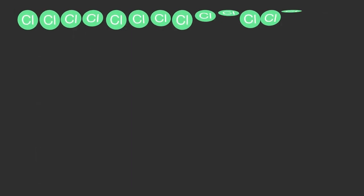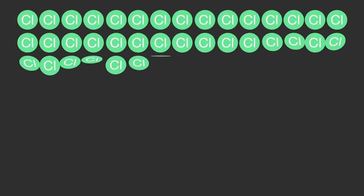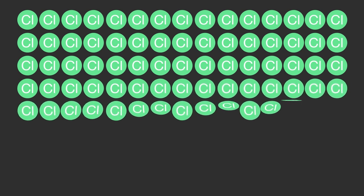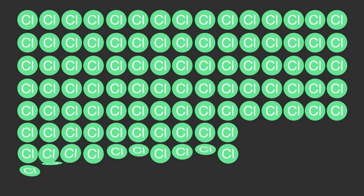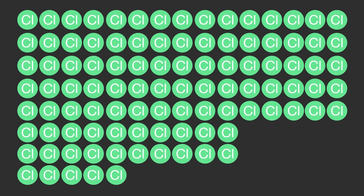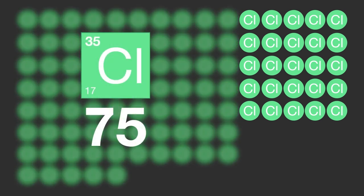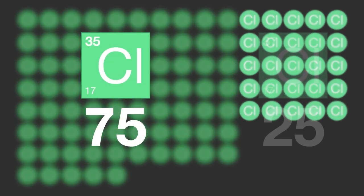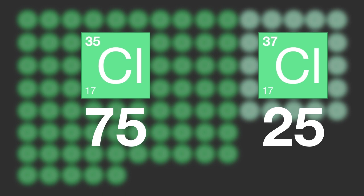One way of visualizing this is to imagine that you have a sample of 100 naturally occurring chlorine atoms. Based on the abundance in the example already given, 75 of these would be chlorine-35 and 25 would be chlorine-37.